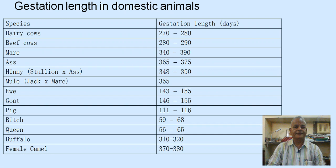Gestation lengths for different animal species: cattle 270–280 days, beef cows 280–290 days, mares 340–390 days, ass 365–375 days, jennies 340–350 days, mule 355 days, ewe 143–155 days, pig 111–116 days, bitch 59–68 days, queen 56–65 days, buffaloes 310–320 days, and female camel 370–380 days.